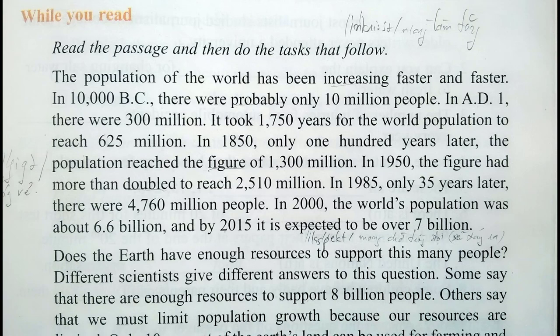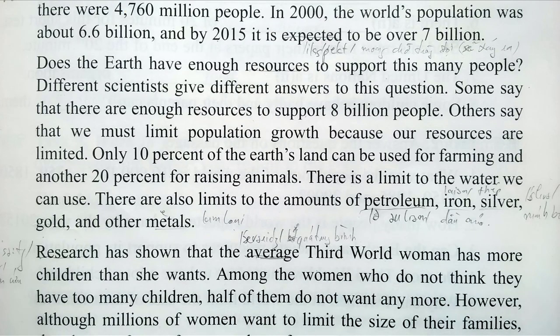In 1850, only 100 years later, the population reached 1,300 million. In 1950 the figure had more than doubled to reach 2,510 million. In 1985, only 35 years later, there were 4,760 million people. In 2000 the world's population was about 6.6 billion, and by 2015 it is expected to be over 7 billion.